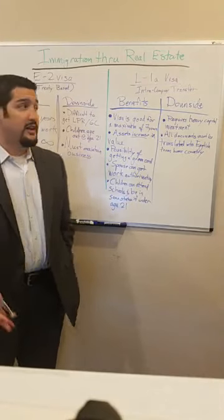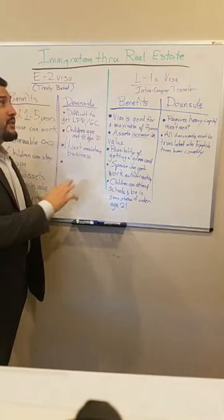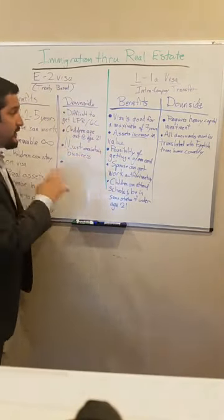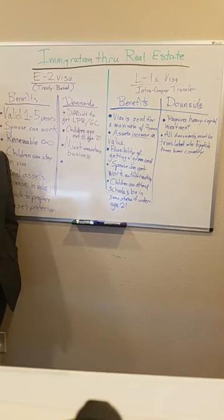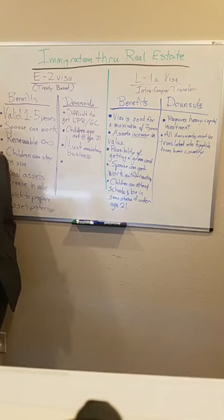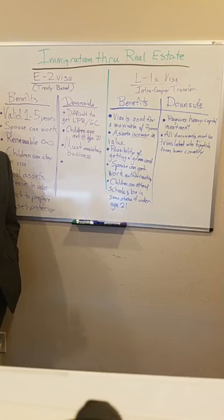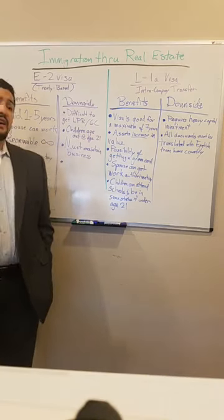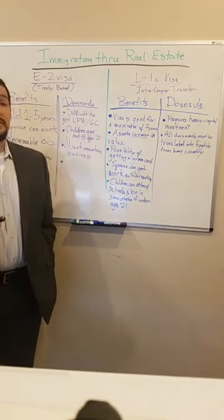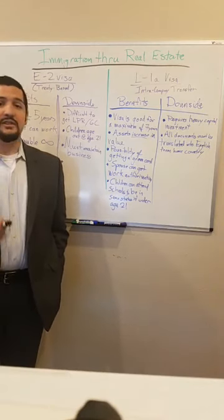What I would like to focus on today is both E-2 visa and L-1 visa. E-2 visa is a treaty-based visa. That means that the United States has a treaty with whatever home country the potential applicant is from. So if you're from Canada, from Mexico, there's a treaty that allows somebody from Canada or Mexico to come to the United States and get a non-immigrant visa. If you're from other countries such as India, there is no such visa available because there's no such treaty between the United States and India.